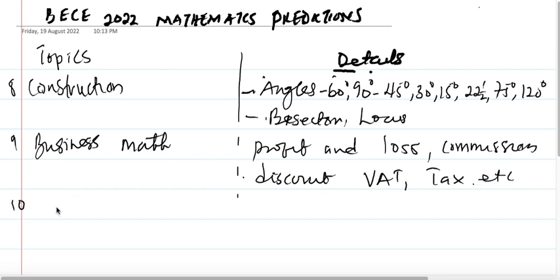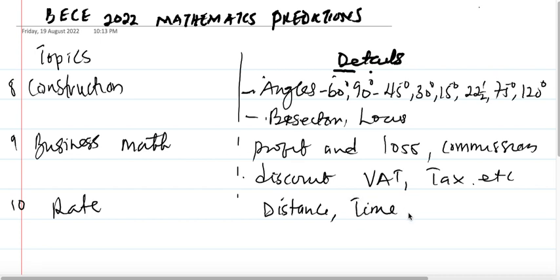The ninth topic is Business Mathematics. You can talk of profit and loss, commission, discount, VAT, tax, and so forth. Then the last one is Rate, which covers distance, time, and speed.